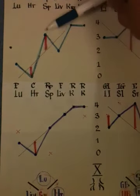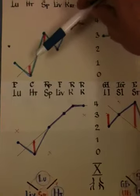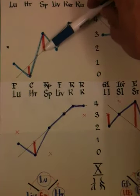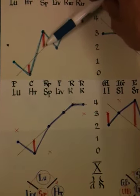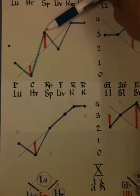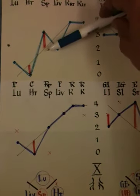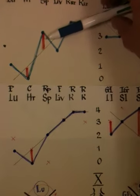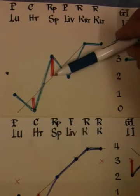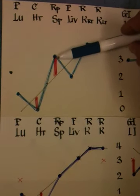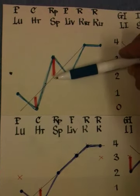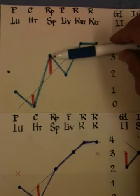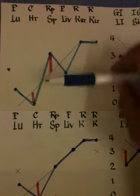For the spleen-pancreas meridian, which is in excess — it becomes more yin — the pulse moves from the more yang area towards the more yin area due to deficiency of yang and excess of yin. So what we need to do in this case is use acupuncture on the mu point of the spleen and do moxibustion on the back shu point of the spleen-pancreas, moving it backwards.